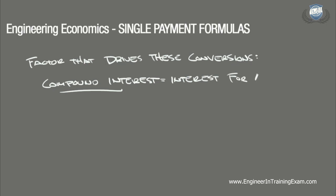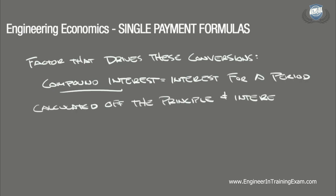Compound interest refers to the interest for a period calculated off the principal and interest from a previous period. All engineering economic analysis is based off compound interest, and for that reason, special tables with various pre-calculated conversion factors have been established for our use.